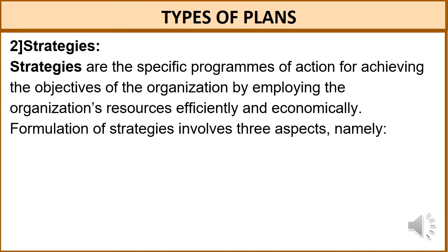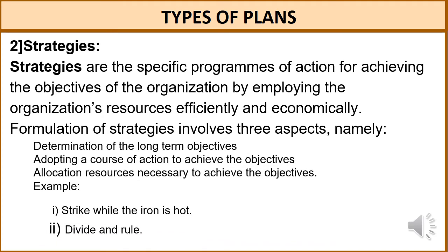The next type of plan is strategies. Strategies are specific programs of action for achieving the objectives of the organization by employing the organization's resources efficiently and economically. Formulation of strategies involves three aspects: determination of long-term objectives, adopting a course of action to achieve the objectives, and allocation of resources necessary to achieve the objectives. For example, 'strike while the iron is hot' or 'divide and rule.'